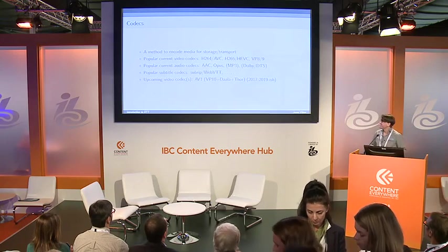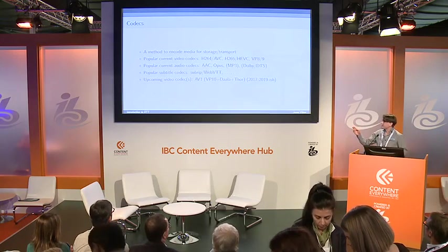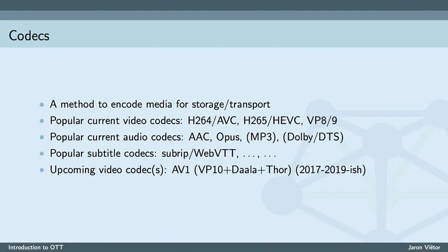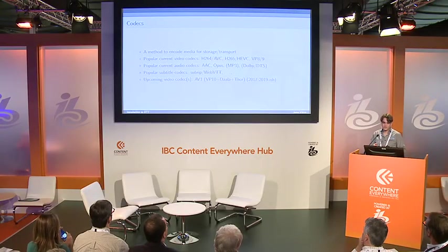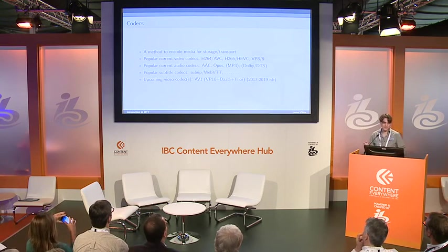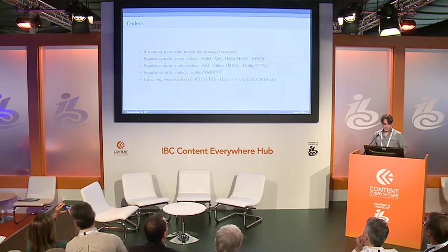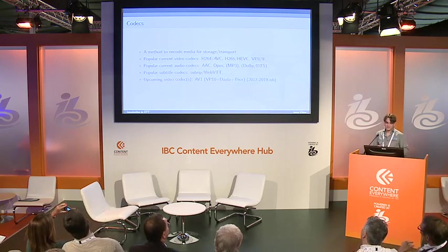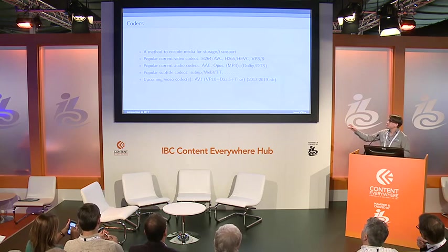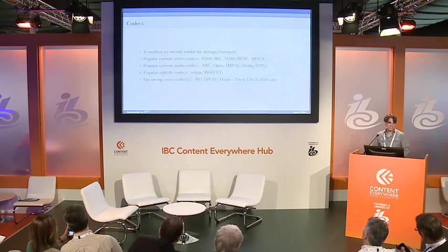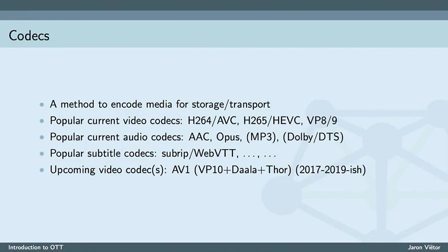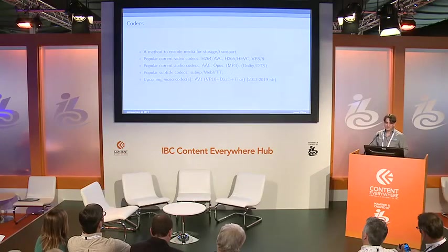There are also upcoming video codecs. AV1 is being made by the Open Media Alliance, which is basically a merger of VP10, Daala, and THOR — all codecs in development — combined into what should be the holy grail of video codecs. Similar to what Opus is for audio, AV1 should be that for video in the future. Since the merger, it's a bit unclear how fast development is going, but I would expect it to be available sometime around 2017 to 2019. It could be earlier or later — there's really no way to know for sure, but that's a pretty good estimate.